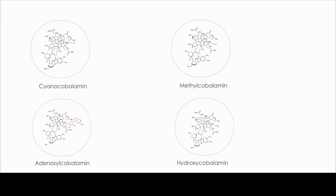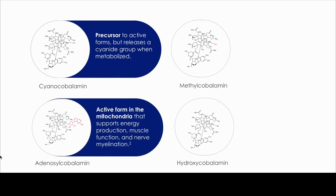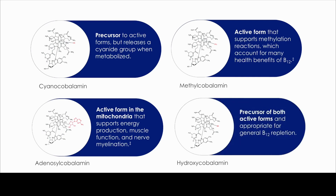There are four forms of vitamin B12 available as dietary supplements. Cyanocobalamin is a precursor to both active forms but releases a cyanide group when metabolized, which is why many practitioners choose to avoid it. Adenosylcobalamin is the mitochondrial active form supporting energy production, muscle, and nerve health. Methylcobalamin is the second active form, mainly involved in homocysteine metabolism. Hydroxycobalamin is a precursor to both active forms and is a great option regardless of the specific clinical indication.